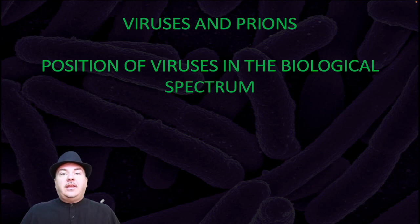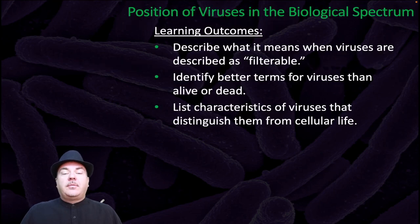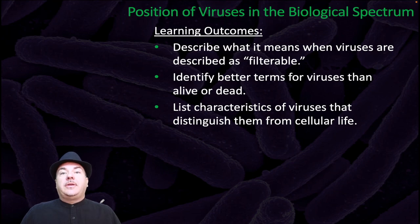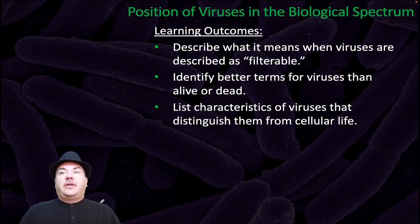Dr. Sage here. In today's lecture, we begin discussing viruses and prions. In particular, we're going to talk about the position of viruses in the biological spectrum. By the end of this video, you should be able to describe what it means when viruses are described as filterable, identify better terms for viruses than alive or dead, and list characteristics of viruses that distinguish them from cellular life.